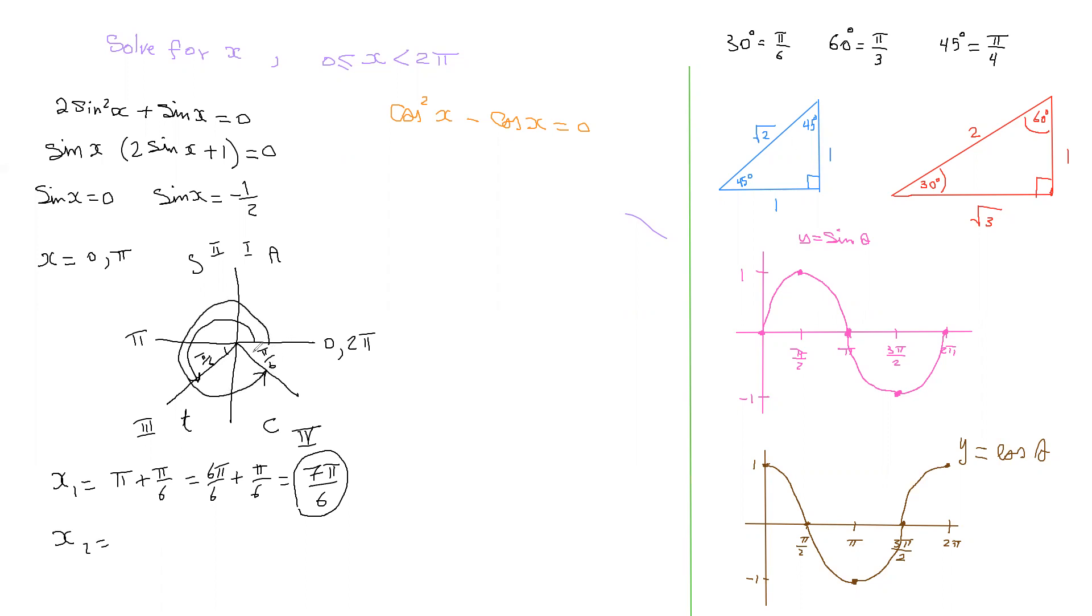If you want to find out what that angle is, just go all the way to two pi and take away the reference angle pi over six. So it would be two pi minus pi over six, which is the same as 12 pi over six minus pi over six, which gives you 11 pi over six. That's your second answer. So you have four answers to this: two came from sine x equals zero, and these two came from sine x equals negative one half.